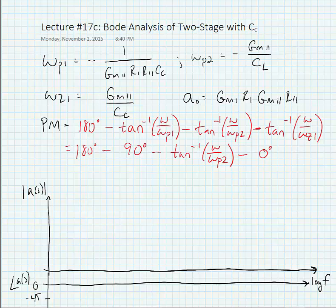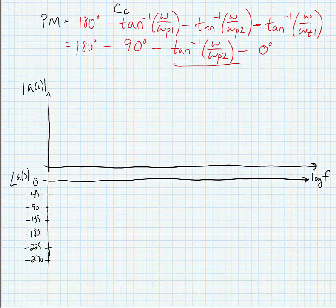Using this for any desired phase margin we can figure out what coefficient we need to have for the relation between the gain bandwidth or unity loop gain frequency and omega p2.